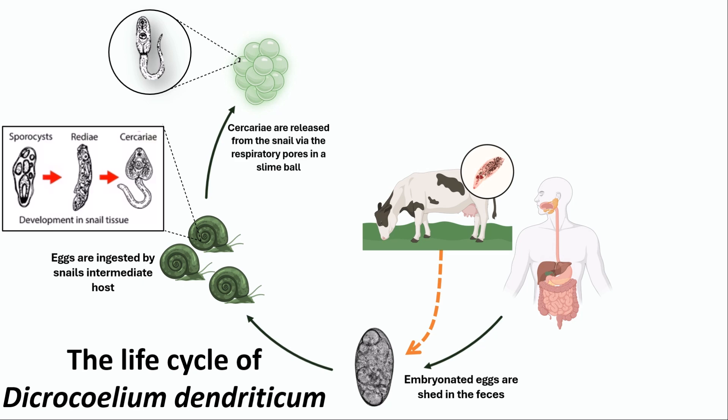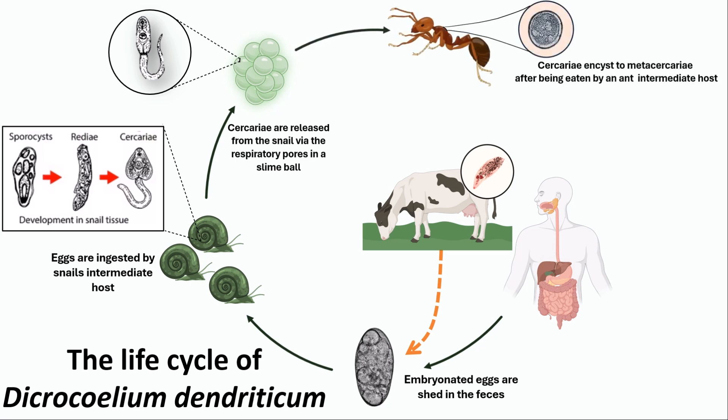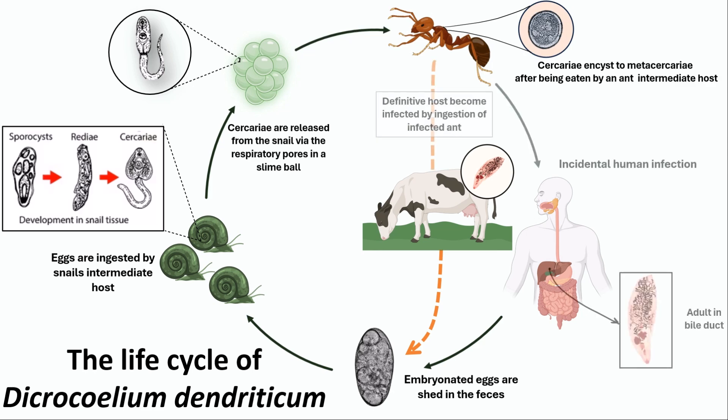After a slime ball is ingested by the second intermediate host, which is an ant, the cercariae become free in the intestine and migrate to the hemocoel, where they become metacercariae. When the infected ant is eaten by a suitable definitive host, the metacercariae excyst in the small intestine. Next, the worms migrate to the bile ducts, where they mature into adults.